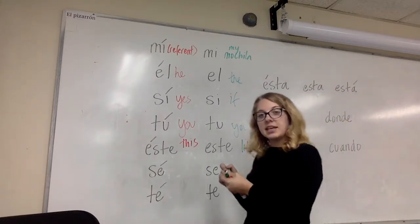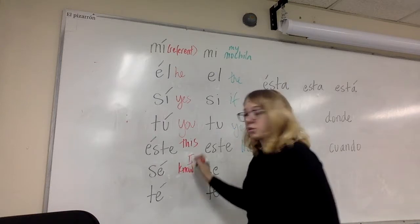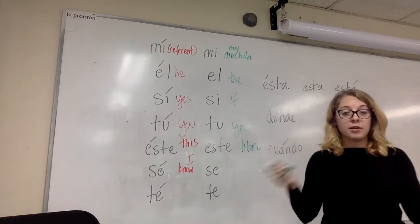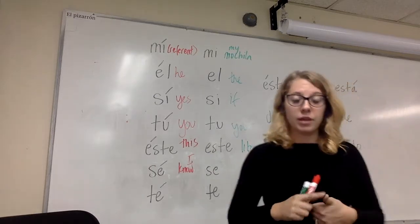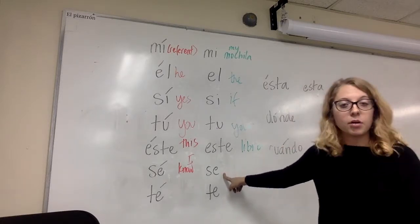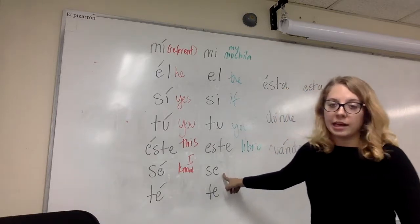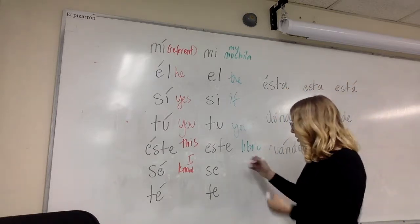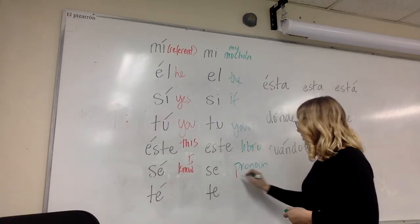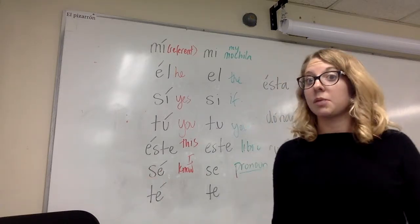Then we have 'sé' and 'se.' 'Sé' with an accent means 'to know' — specifically 'I know.' So if I say 'lo sé,' I'm saying 'I know it.' 'Se' without an accent is used as a pronoun for many things: reflexives, to take away culpability — like 'se me cayó el libro' — or for passive voice, like 'se habla español en la clase.' It's really just a pronoun used to take away responsibility from the subject noun.